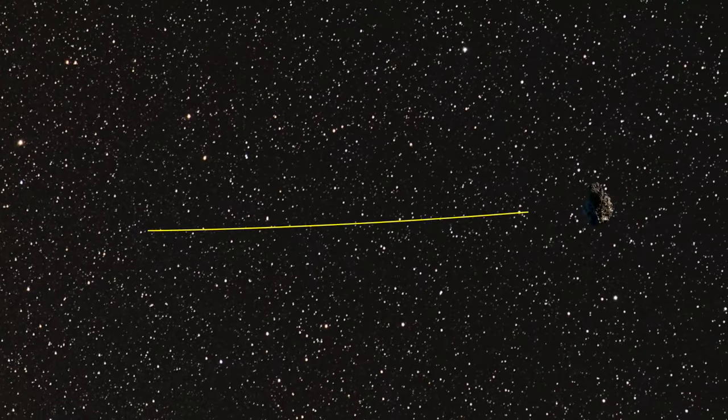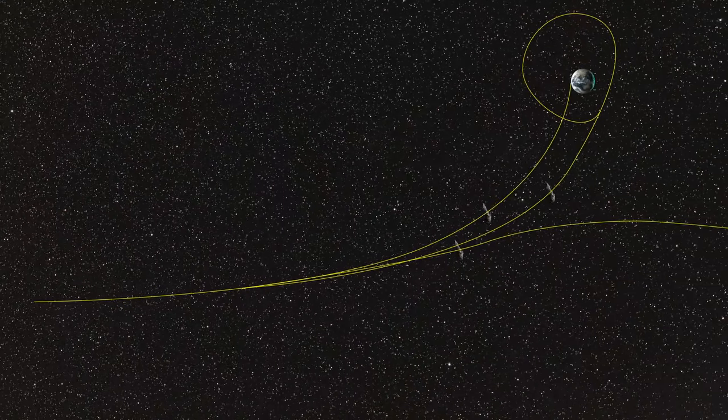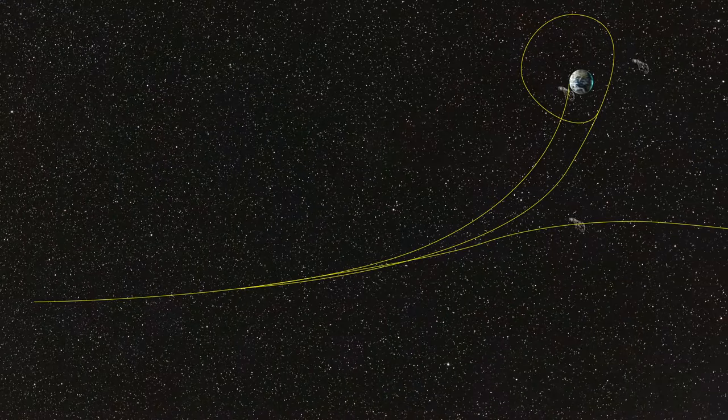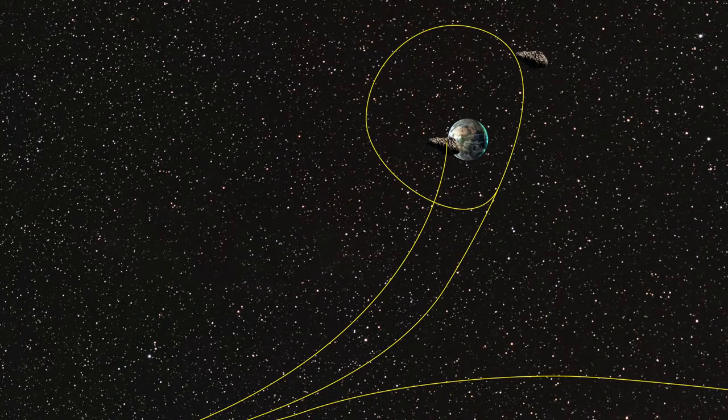Temporarily captured objects, such as this one, are rare. They need to have a specific direction and speed to be captured by Earth's gravitational pull. Otherwise, they either crash into the planet or fly in another direction.